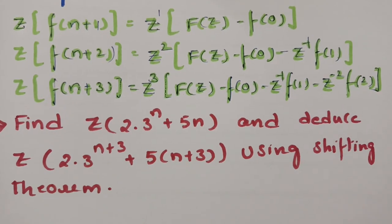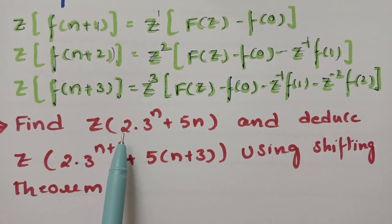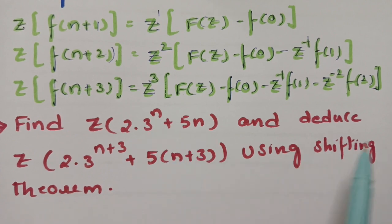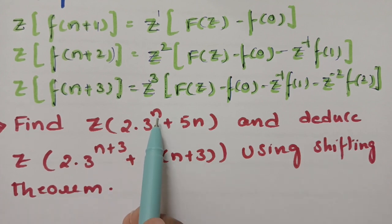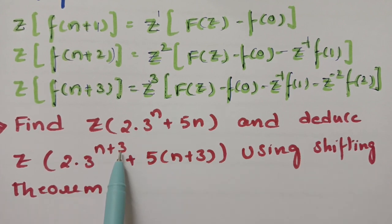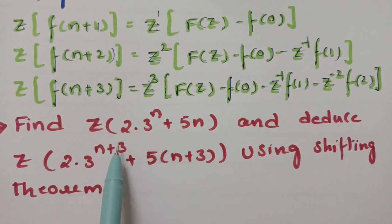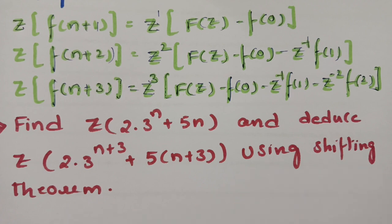Using the shifting theorem, here is the most important problem. We have to find the Z transform of 2·3^n + 5n, and deduce the Z transform of 2·3^(n+3) + 5(n+3). Here n is shifted towards the left side for 3 units, so we have to deduce to n+3 using the shifting theorem.